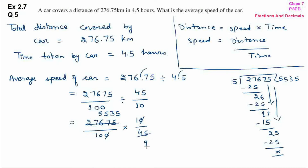Now in the denominator we have 9. The numerator 5535 — let us check if it is divisible by 9 by finding the digit sum. 5 + 5 = 10, 10 + 3 = 13, 13 + 5 = 18. The digit sum is 18, which is divisible by 9. Since 9 × 2 = 18, we will divide 5535 by 9.